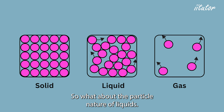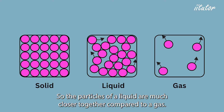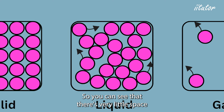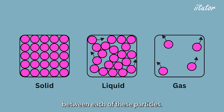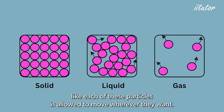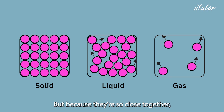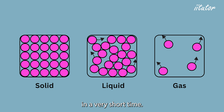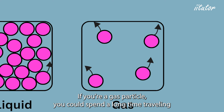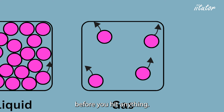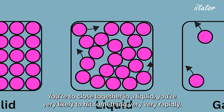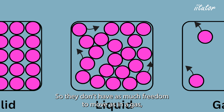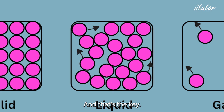The particles of a liquid are much closer together compared to a gas — there's very little space between them. They're still free to move wherever they want, but because they're so close together, they're likely to collide with other particles in a very short time. In a gas, a particle could travel a long time before hitting anything, but in a liquid you're very likely to hit something almost immediately, so particles collide much more frequently.